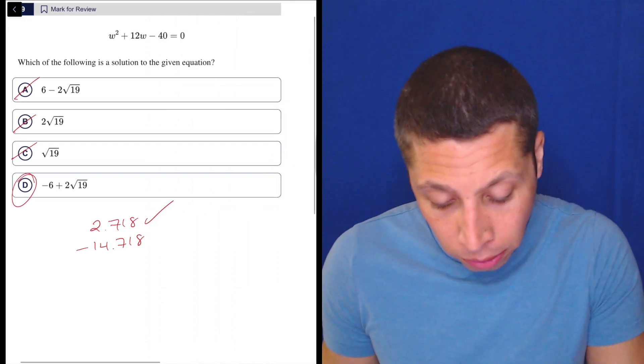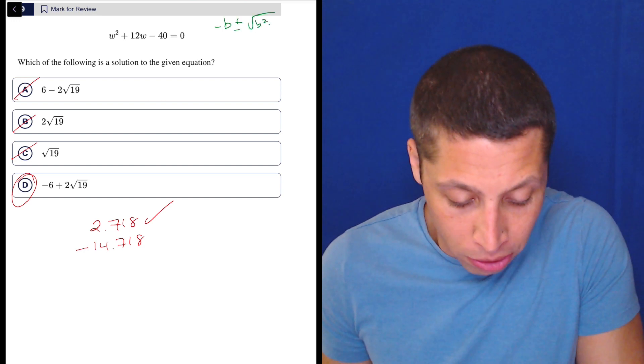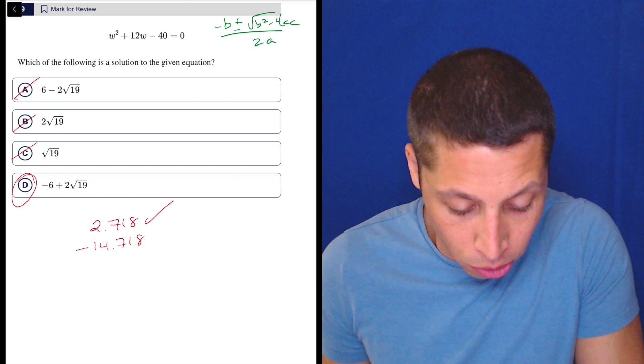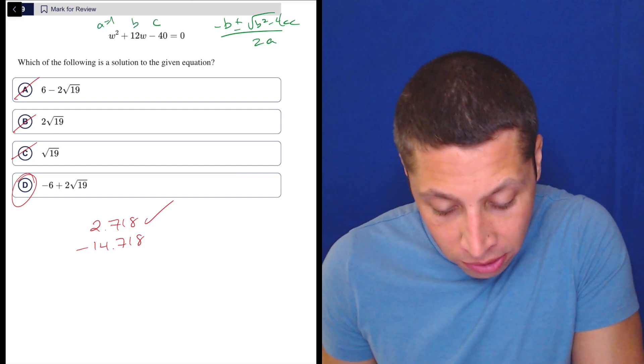If you really want a review of it, remember it's going to be negative B plus or minus the square root of B squared minus 4AC all over 2A. So we got to plug in. We got our A is 1, B is 12, C is negative 40.